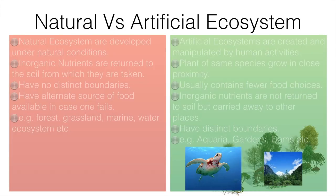In artificial ecosystems, organisms depend on only one source of food — whatever human beings supply. Examples of natural ecosystems include grasslands, forests, and marine water, while examples of artificial ecosystems include aquaria, gardens, and dams.